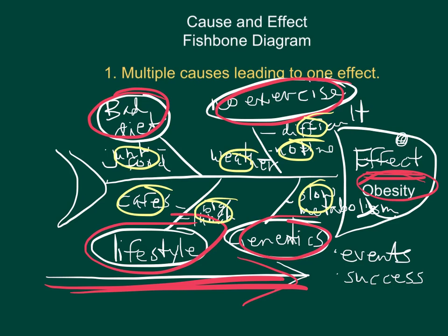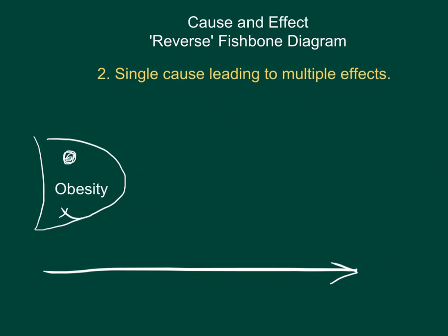That is a fishbone diagram for multiple causes leading to one effect, and those causes are all happening at the same time — it's not a chain reaction. Now let's look at a different situation. We're going this way again, we have our fish head once more, and we're dealing with the topic of obesity — but this time we're looking at obesity as a cause.